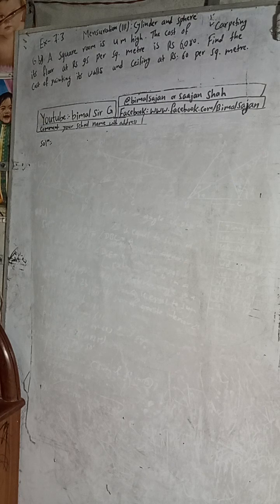Hi class 9 and 10 students, welcome back to Bimbal Sarji YouTube channel. This is question number 6B, exercise 7.3, mensuration third part — cylinder and sphere — class 9 compulsory maths.